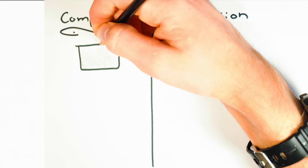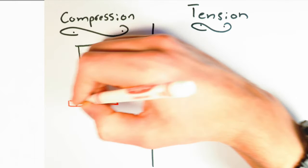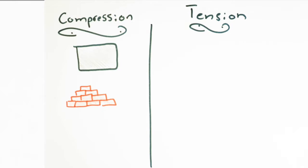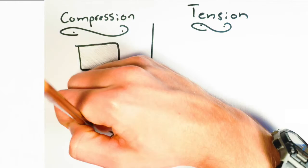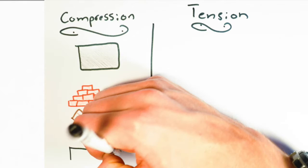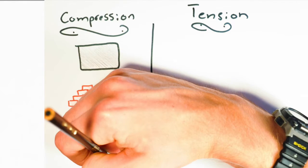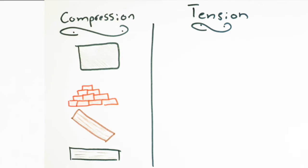Engineers analyze every component of a bridge to determine what members will be in tension, compression, or both. Engineers must keep in mind that certain materials are better under compression rather than tension. These include concrete, brick, hardwoods, and steel.